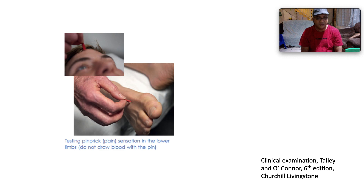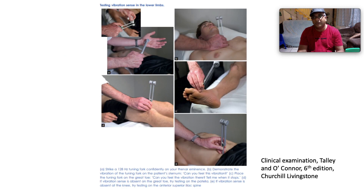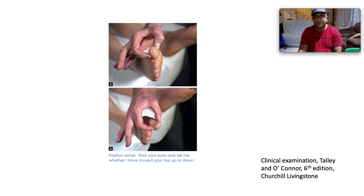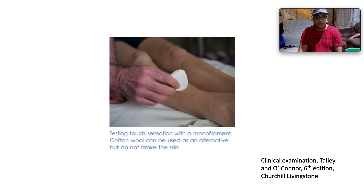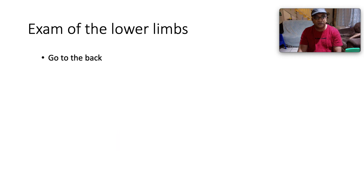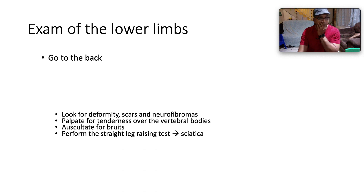Test pain sensation in the lower limbs without pressing too hard. For vibration, first demonstrate over the sternum, then compare at joints symmetrically, moving proximally if deficient. For proprioception, grasp the distal phalanx from the lateral aspects, move it up and down, ask the patient to close their eyes and tell you if you moved the toe up or down. Light touch can be tested with cotton wool — touch the skin without stroking.